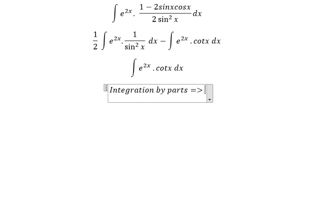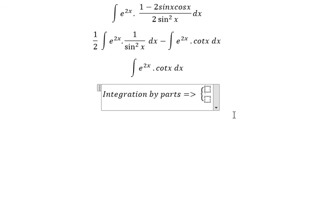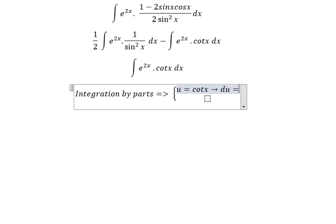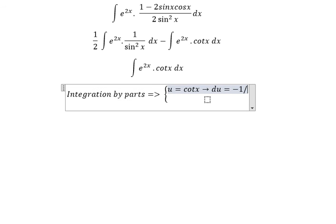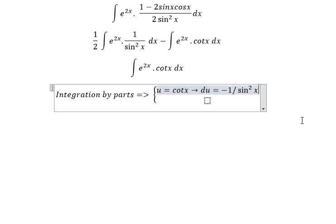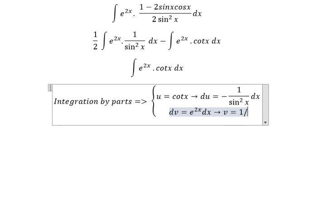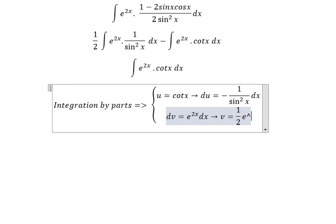So we have u and dv. u equal cotangent x, dv equals to e to the power of 2x dx. So you got about v is equal to 1 over 2 e to the power of 2x.